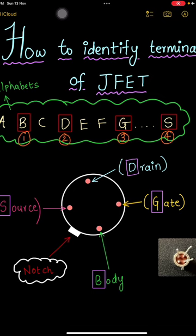These are the four terminals of JFET. What you have to do is hold the JFET in such a way that the notch should point towards you and the four terminals should also point towards you.